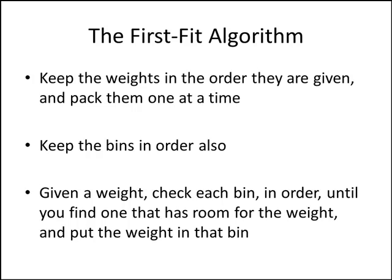The algorithm we're being asked to use here is called the first fit algorithm. Keep the weights in the order that they are given and pack them one at a time. We also want to have bins in order — imagine a bunch of empty boxes sitting in a row. Given a weight that we want to pack, we check each bin in order until we find one that has room for that weight, then we put the weight in that bin. We find the first bin that can fit the weight — that's why we call it the first fit algorithm.